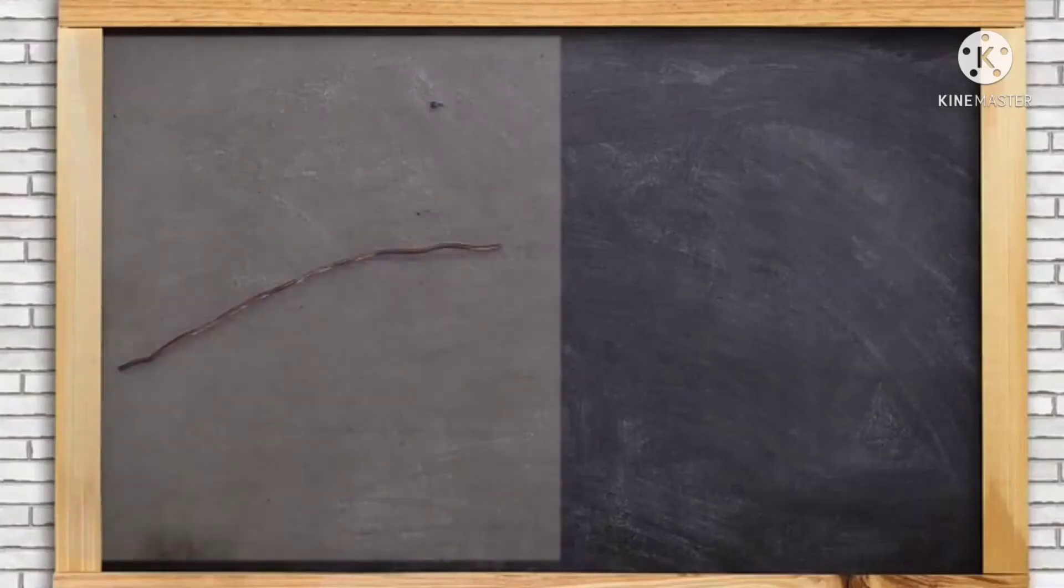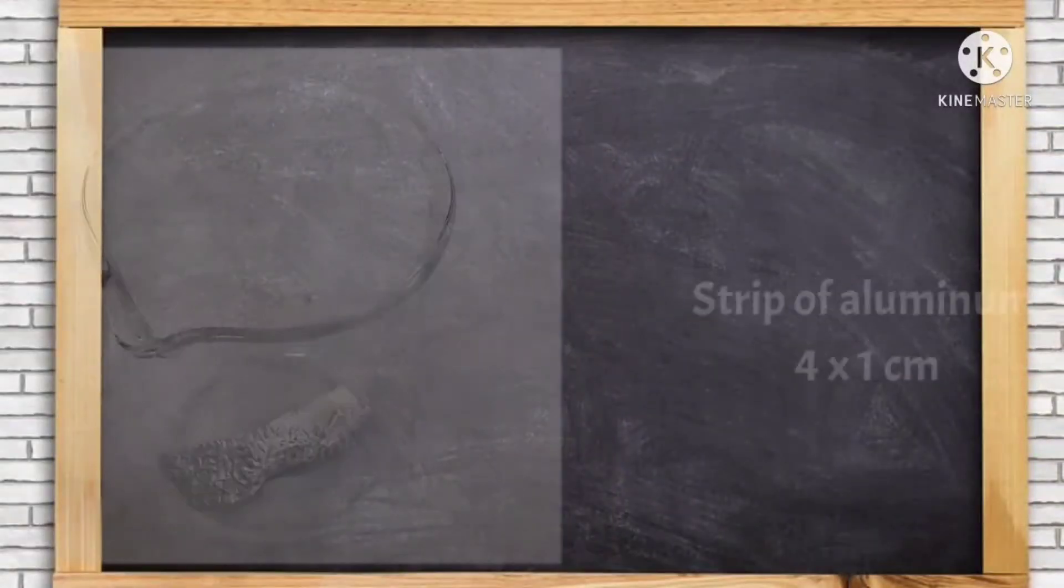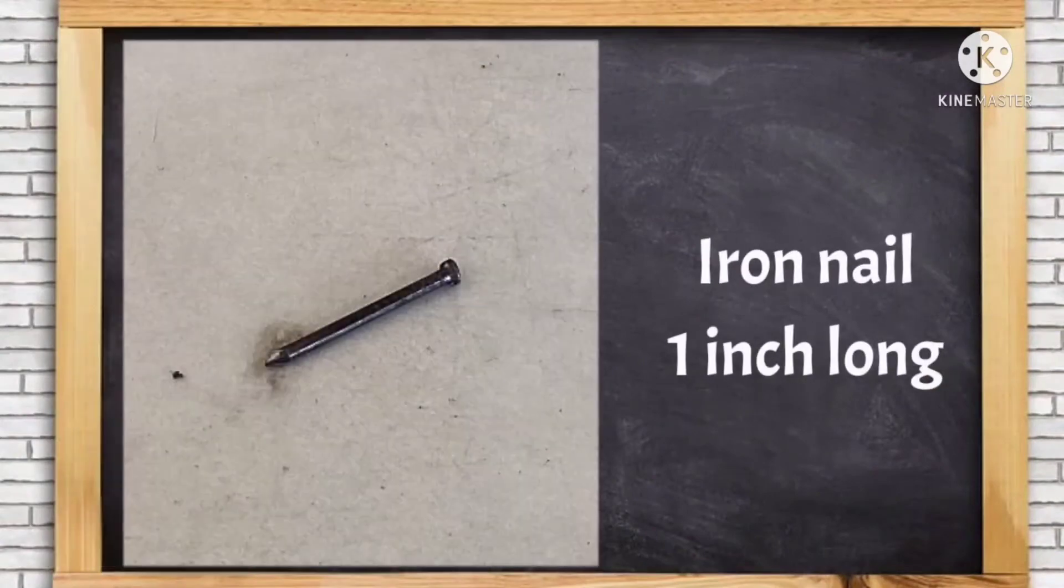And here are the materials needed. A piece of copper wire, 4 cm long. A strip of aluminum, 4 by 1 cm. An iron nail, 1 inch long.